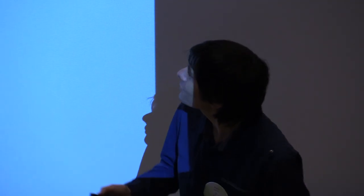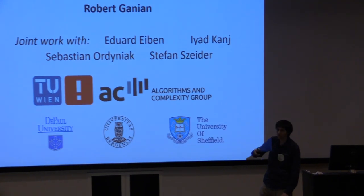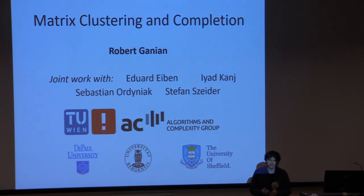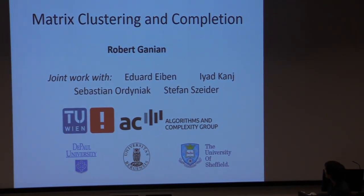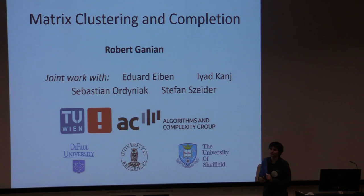Welcome to the last session today. It's quite a pleasure to introduce Robert Gagnon, who will speak about matrix clustering and completion. This is joint work with a few colleagues and co-authors: mainly Edward, who is here, Iyad, Sebastian, and Stefan, who all sent their regards but are not here. I will be speaking about some problems which are actually not defined on graphs, but graphs will pop up — they have a tendency of appearing in these problems.